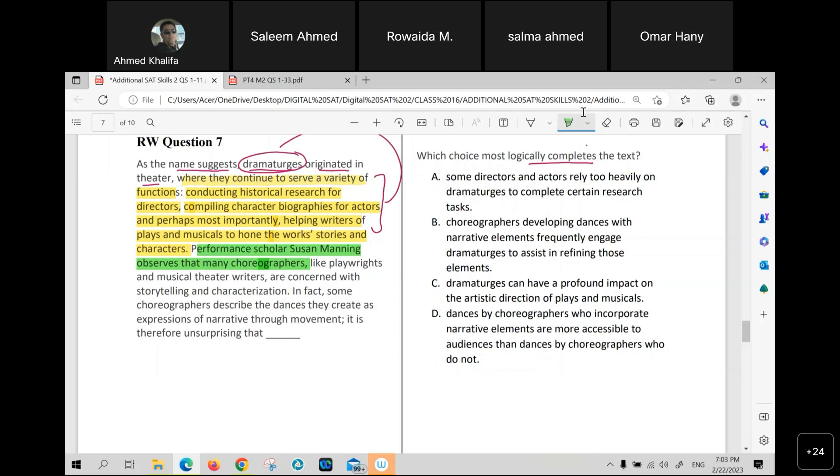Performance scholar Susan Manning observes that many choreographers. Remember, here we are talking about something else. Many choreographers like playwrights and musical theater writers. There is something here. There is a comma here and a comma here. It means what? This is non-essential. So he said like the choreographers, choreographers like playwrights, like musical theater writers, are concerned with storytelling and characterization.